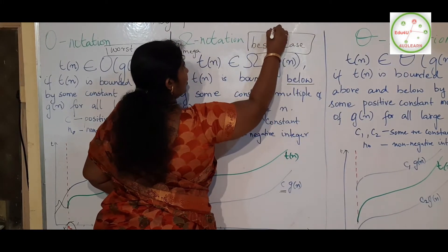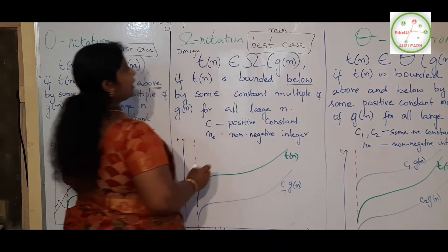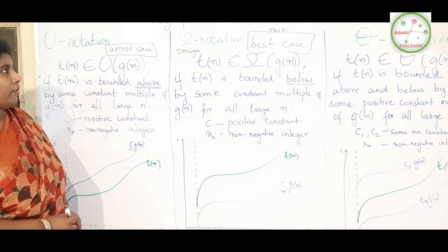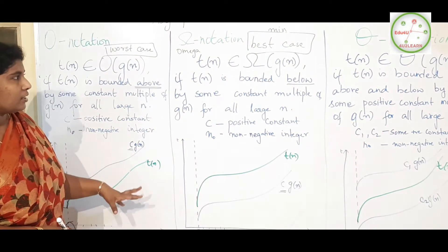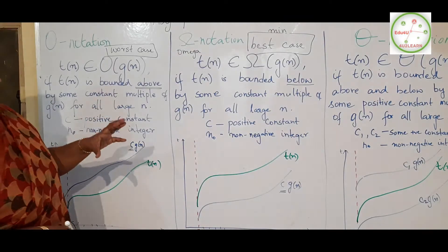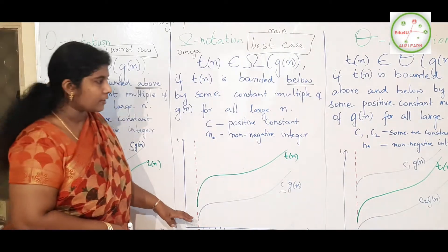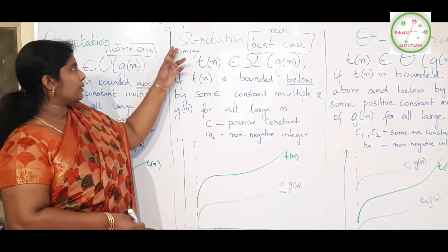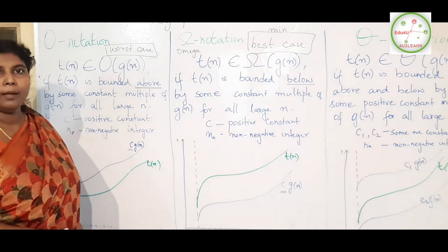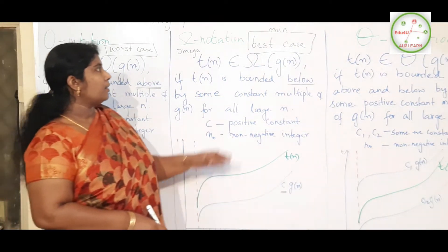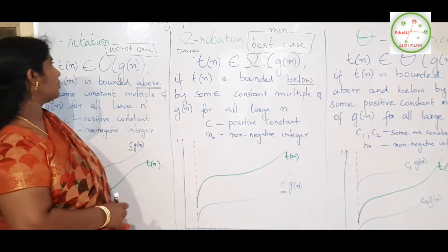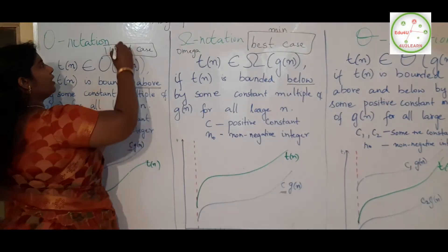This lower bound corresponds to the best case — the minimum time taken for execution. When we get the answer in the very first instance or at a very early stage, we represent it with Big Omega notation. This is the best case, representing the minimum time taken.